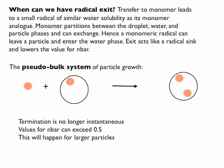Now the last question: what if my particle is big? A propagating radical is on the left-hand side of my particle, but a new radical enters on the other side. It can't detect that there's already a radical in there because the volume is too large, so there is no instantaneous termination. As a result, I can have more than one radical in a particle, and n-bar becomes larger than 0.5. As the particle gets bigger and bigger, it starts to look like a bulk polymerization where compartmentalization no longer applies. Above roughly one micron it's effectively bulk polymerization. Systems where n-bar exceeds 0.5 are called pseudo-bulk systems.